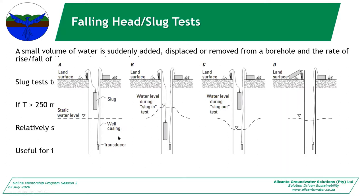Here are some examples of how slug tests work. Test types A and B are the displacement test, which we typically use — you drop the slug down, get your change in head, the head rises and eventually falls back down again. C and D are where you take out a fixed volume of water, causing a negative displacement that recovers over time. Pouring water in works on the same principle, as the water will also raise the water table in the borehole.